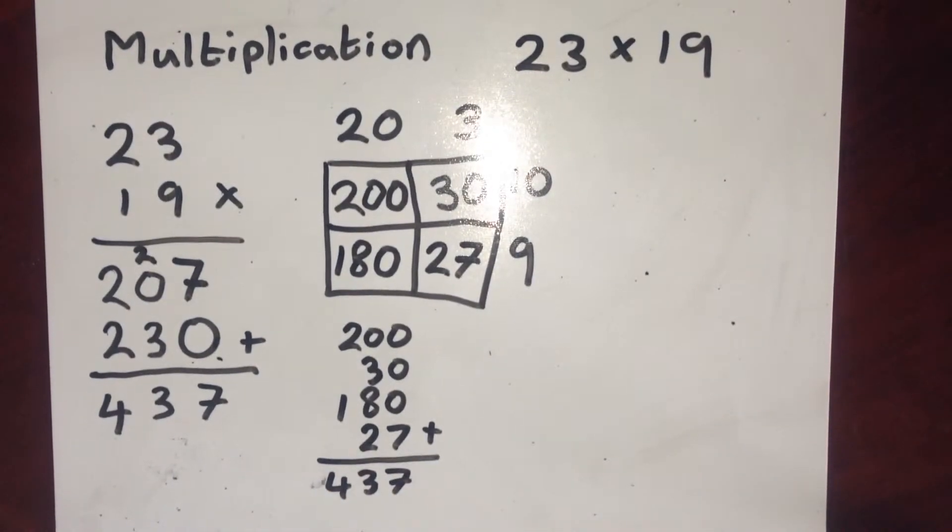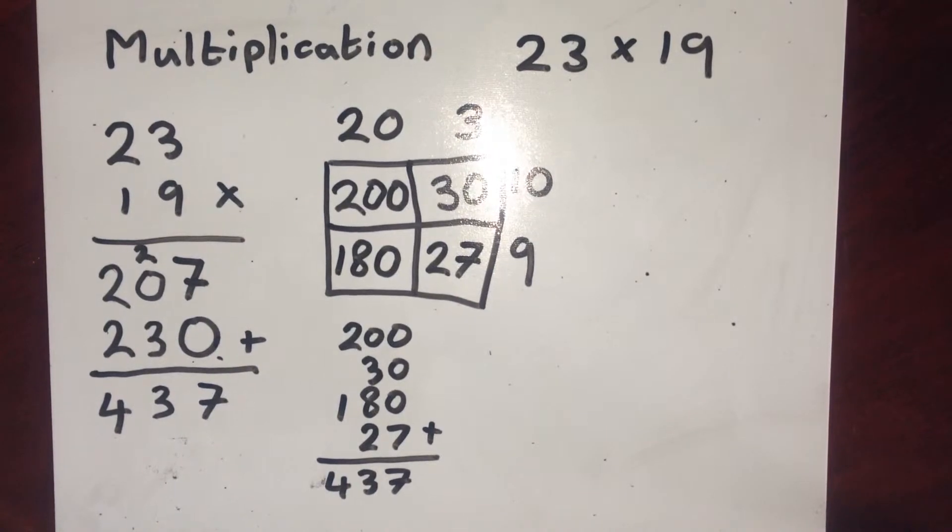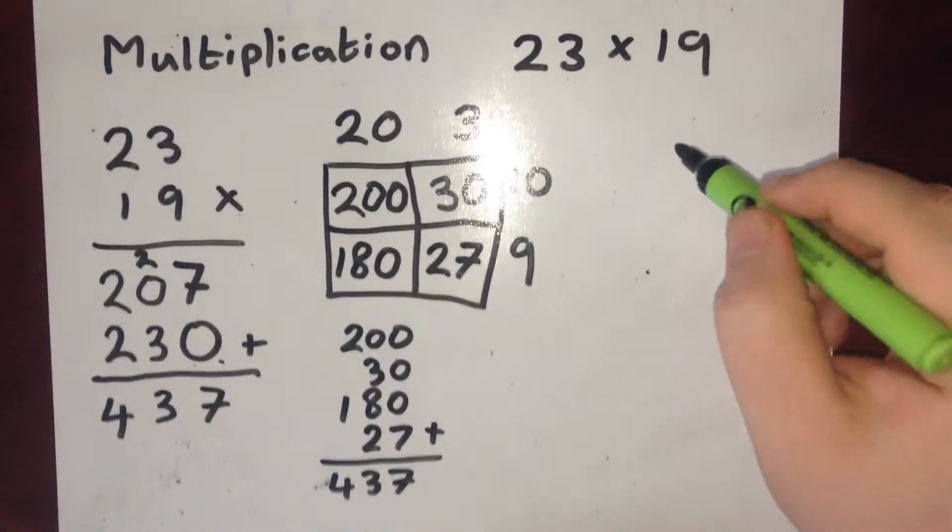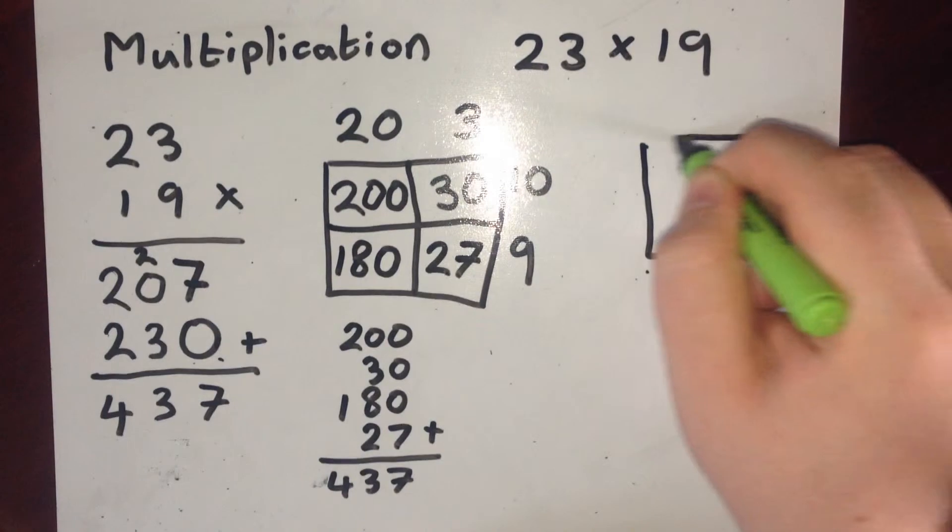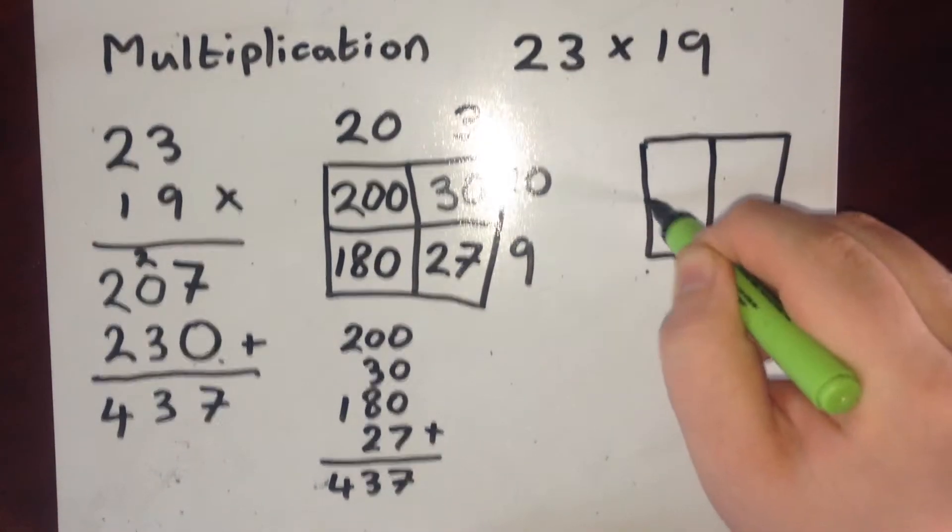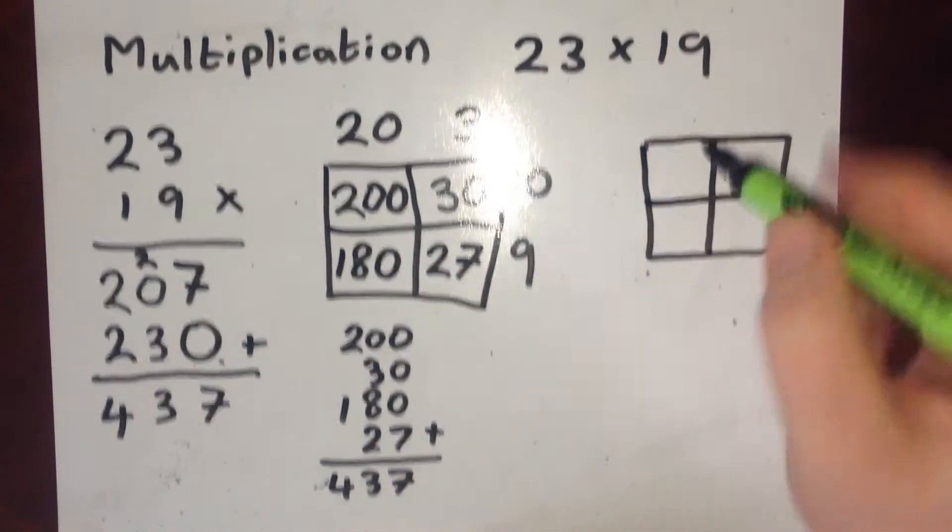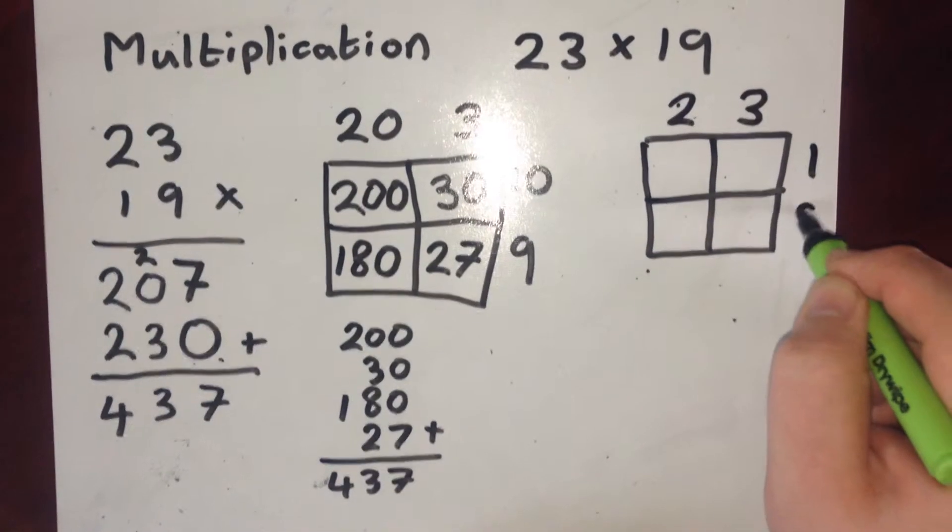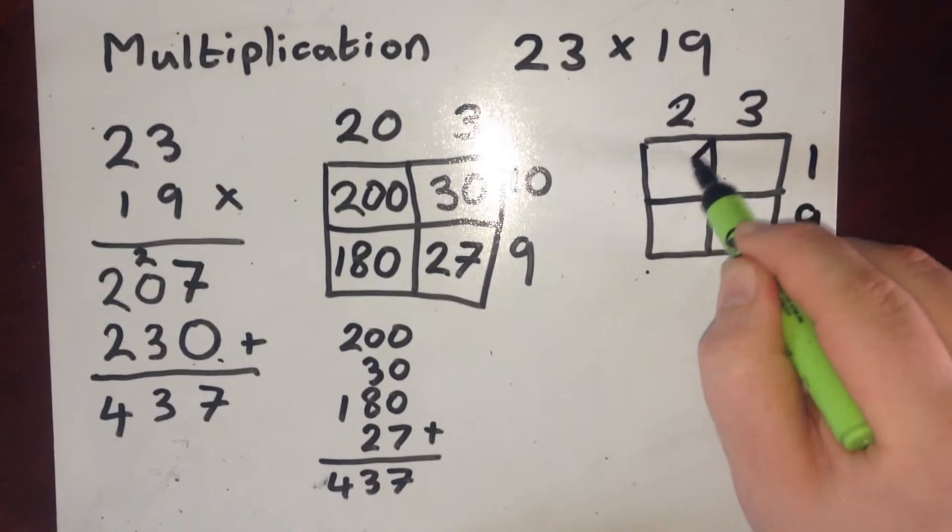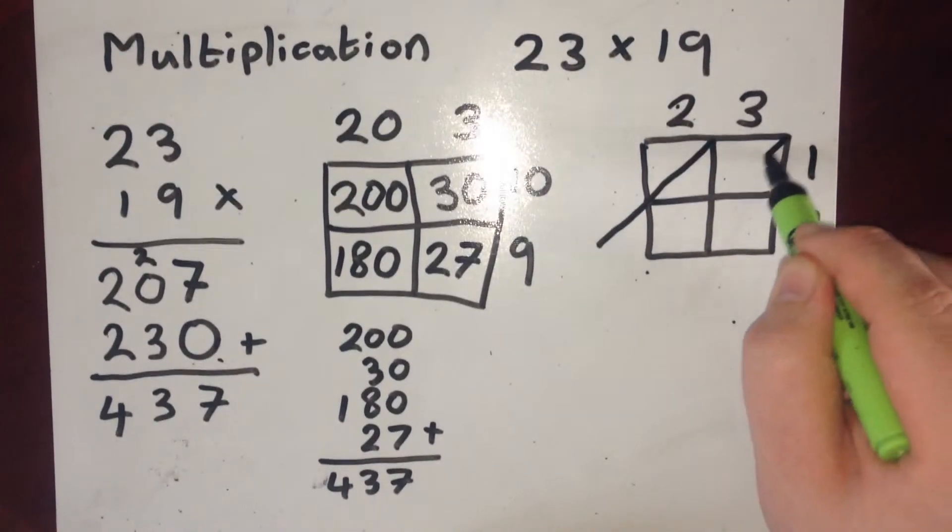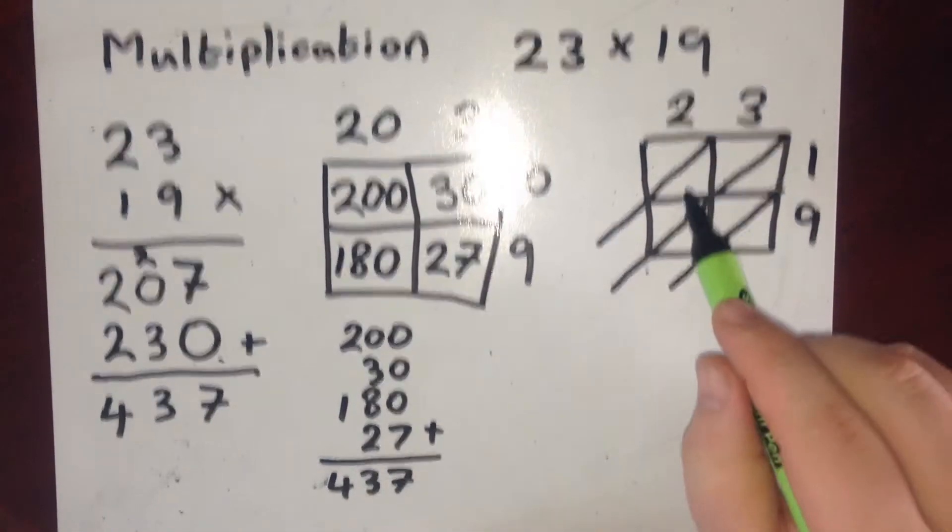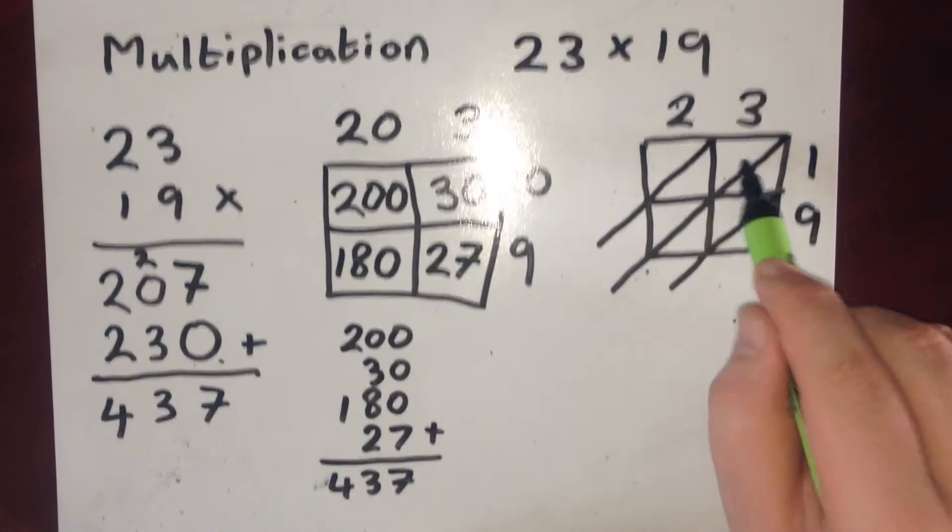The final method I'm going to go through has several different names. It's known as the Chinese method, the lattice method, and a couple of other names besides. This also involves a grid. So I start with a grid. But instead of splitting it into 20 and 3, I just write 23 and I write the 19. The big difference is that I draw diagonal lines through these boxes. So each of these boxes is now split into tens and units.